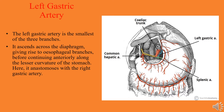The left gastric artery is the smallest of the three branches of the celiac trunk. It ascends across the diaphragm, giving rise to esophageal branches before continuing anteriorly along the lesser curvature of the stomach, where it anastomoses with the right gastric artery.